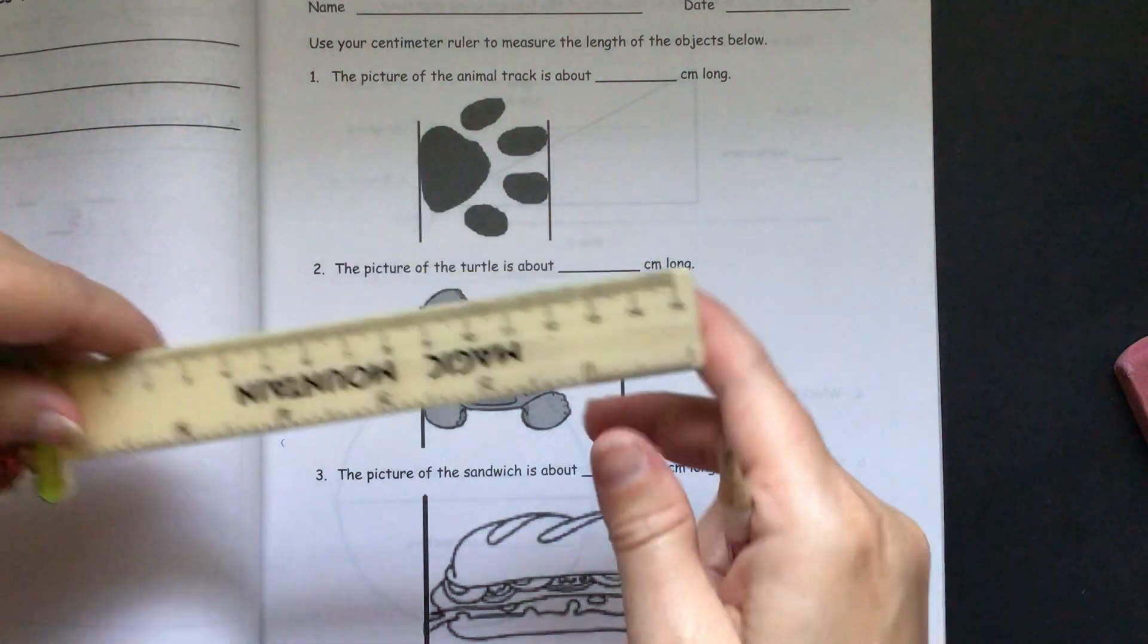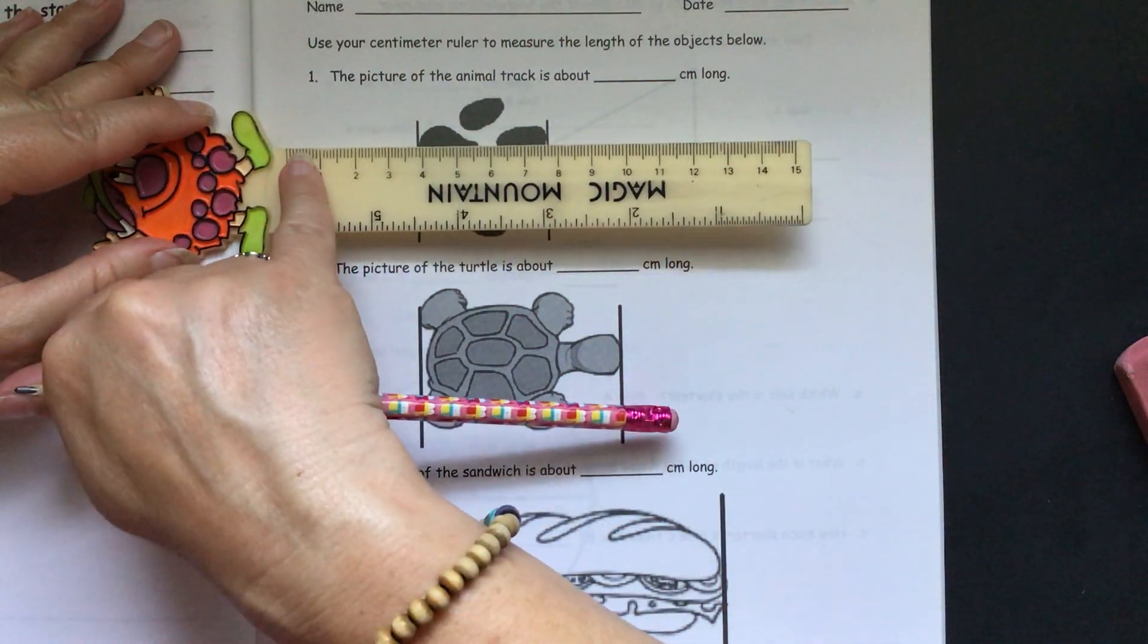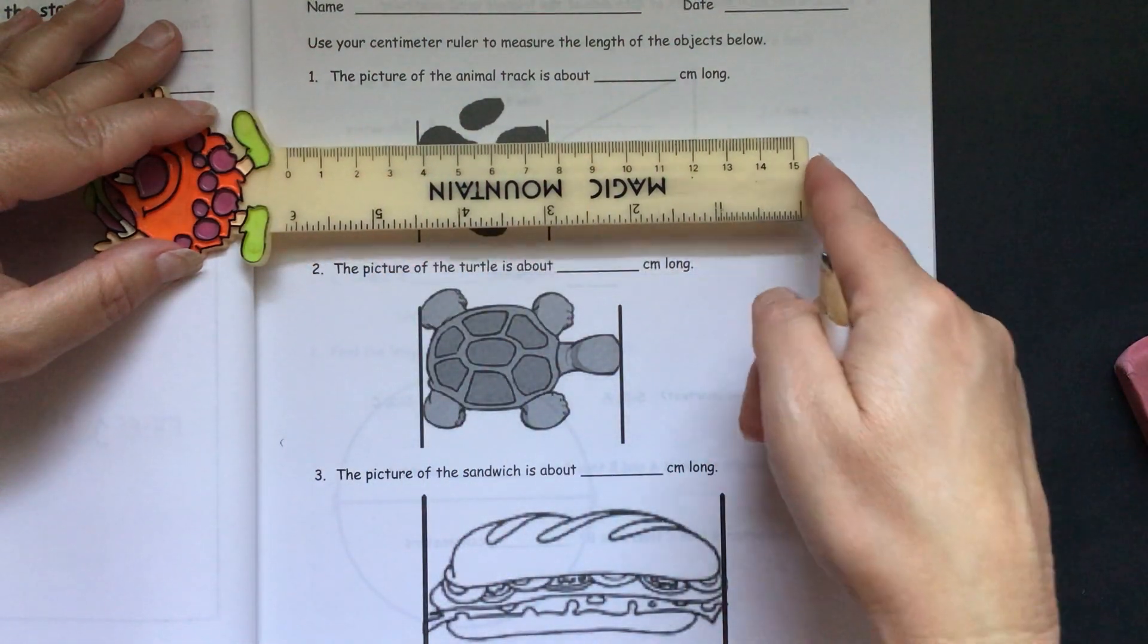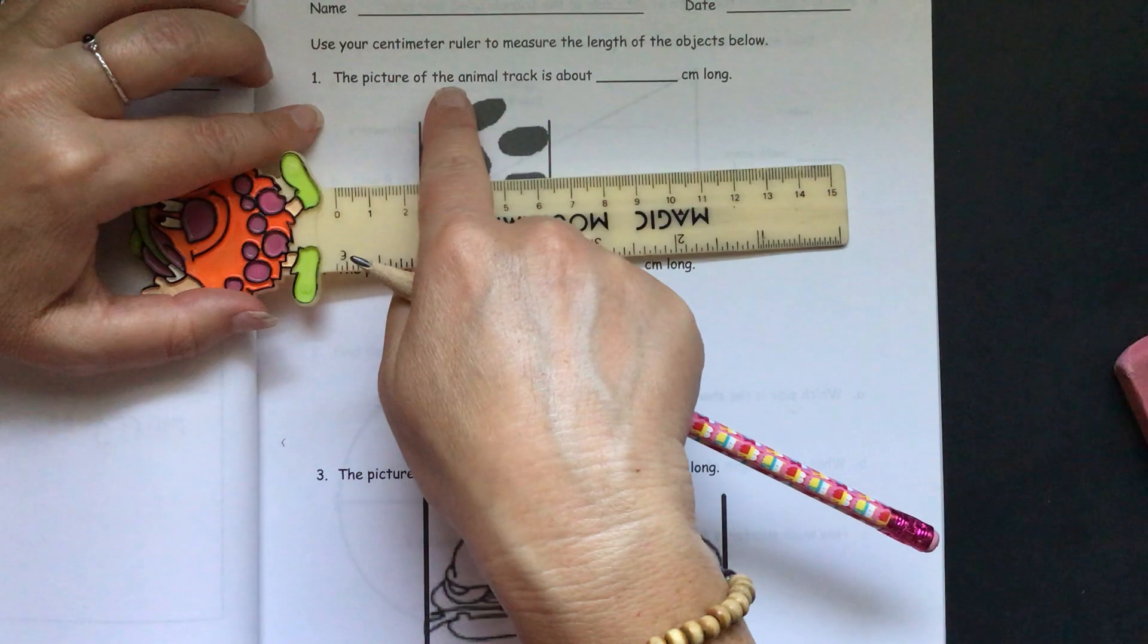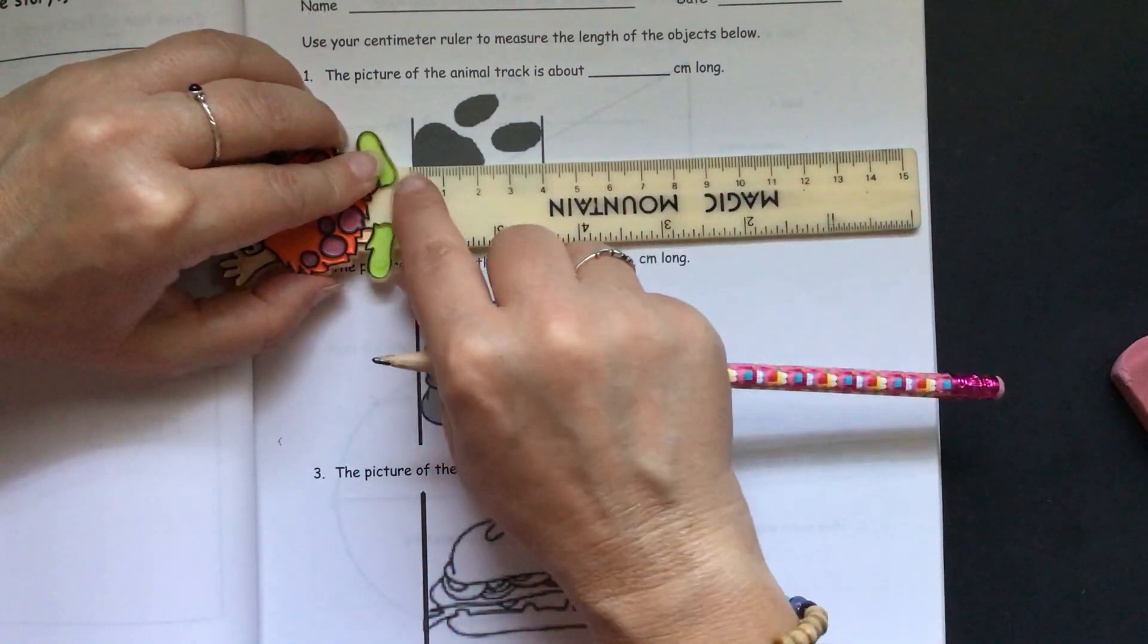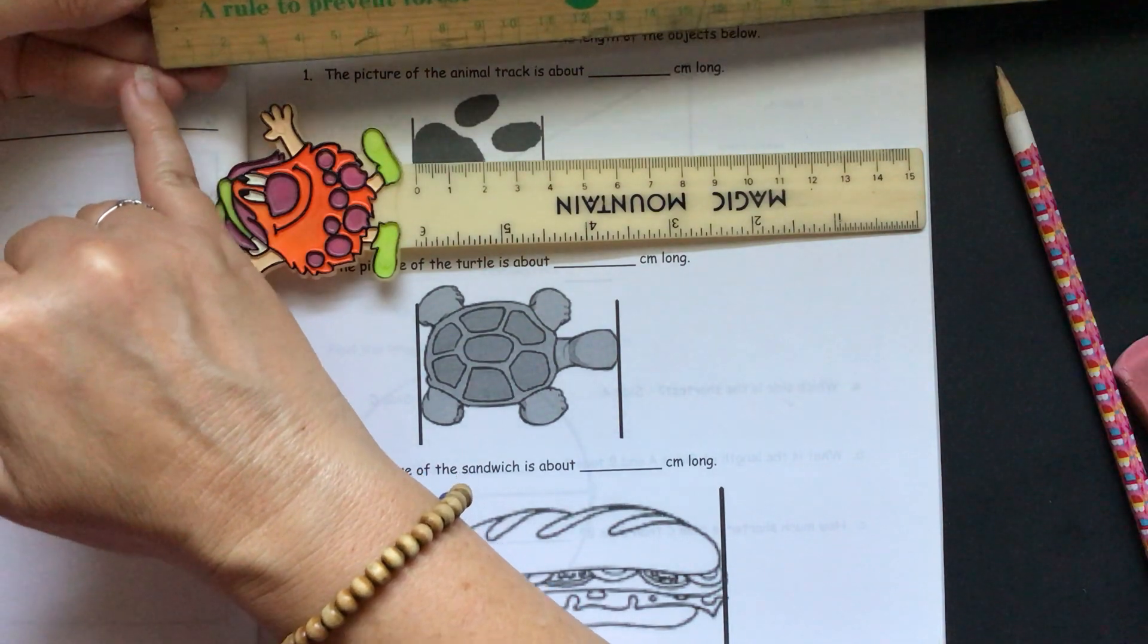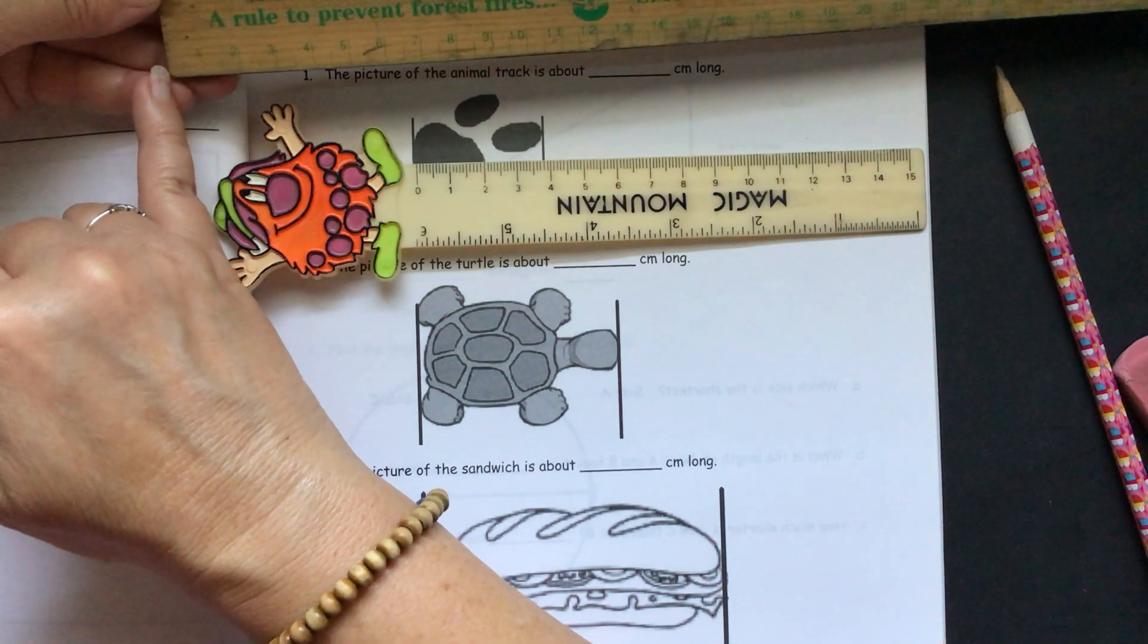I have this cute little ruler from when I was a kid. Here you can see your centimeters are about a pinky space between. We have a zero here and there's a one, two, three, and it goes on. This particular ruler only goes up to 15. The picture of the animal track is about, remember we have to start at the line and go to the next line. If you have a school ruler that looks similar to this, there might be a line before the end. So, you need to make sure you're starting at the line. This particular ruler, the line is lined up with the end.